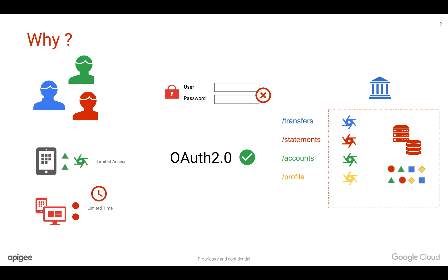Apigee Edge acts like an OAuth 2.0 authorization server where you can secure even your legacy APIs and new kinds of APIs using OAuth 2.0 on the Apigee Edge platform. We're going to see how we're going to do that and how Apigee can help you hands-on in future videos.